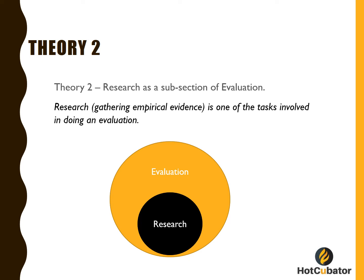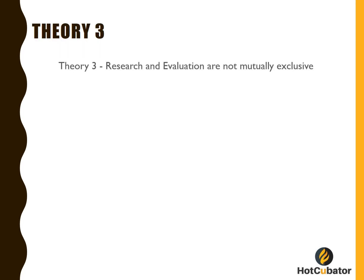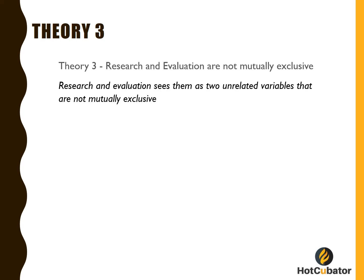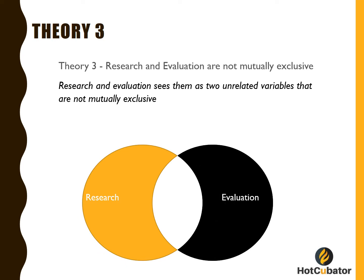The third school of thought is that research and evaluation are not mutually exclusive. This is based on the understanding that research and evaluation are seen as two entirely unrelated variables that are not mutually exclusive. An activity can be both research and evaluation, or neither. Research is about being empirical, whereas evaluation is about drawing evaluative conclusions about quality, merit, or worth.